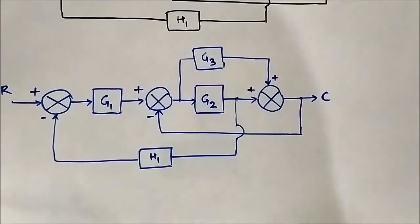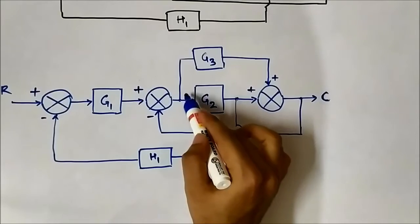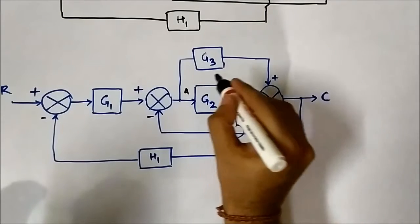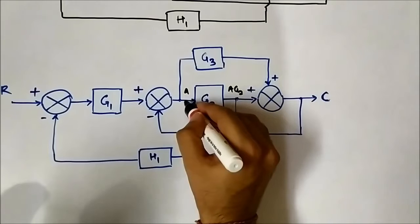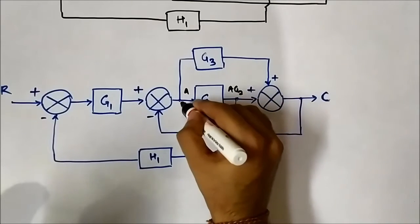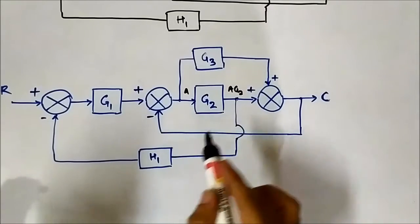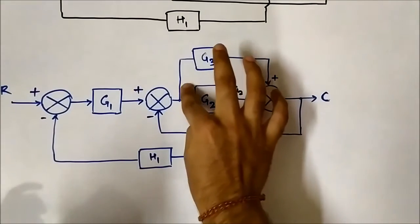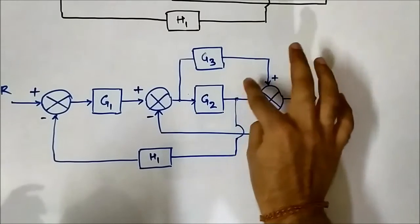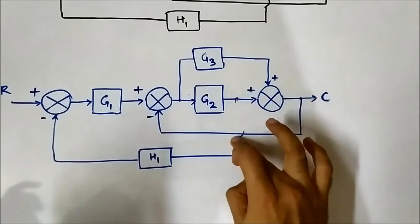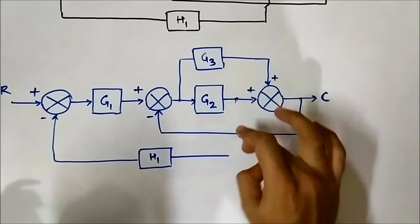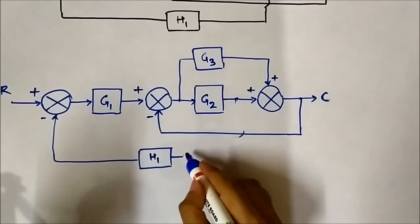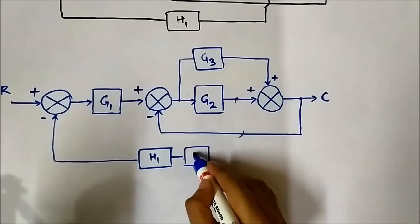Here the block gain is G2. Let the input be A, so the output is A·G2. If we shift the takeoff point behind G2, the value should remain A·G2, so we need to add a block G2 at that location. When we shift this takeoff point, we will be adding a block G2 here.